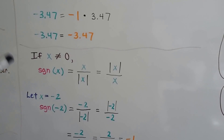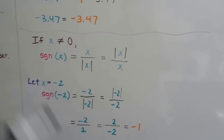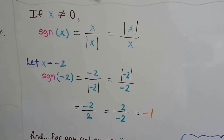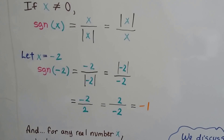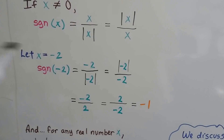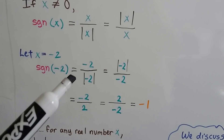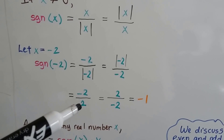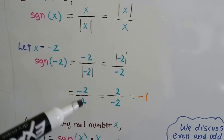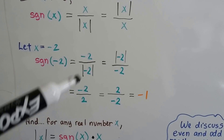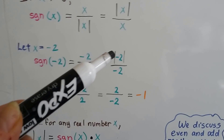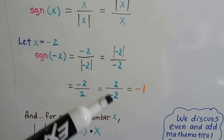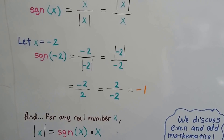Now, if x is not equal to zero, the sign function of x equals x divided by the absolute value of x, which also equals the absolute value of x divided by x. Let's try negative 2: the sign function of negative 2 equals negative 2 divided by the absolute value of negative 2, which is negative 2 divided by 2. Same numerator and denominator, but the numerator kept its negative sign, so we end up with negative 1. And if absolute value is on top, we also get negative 1. See how that works?